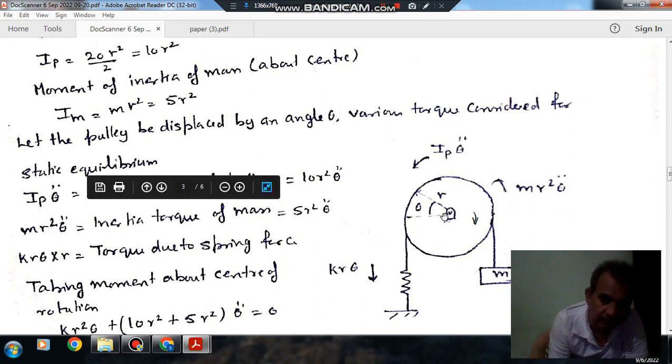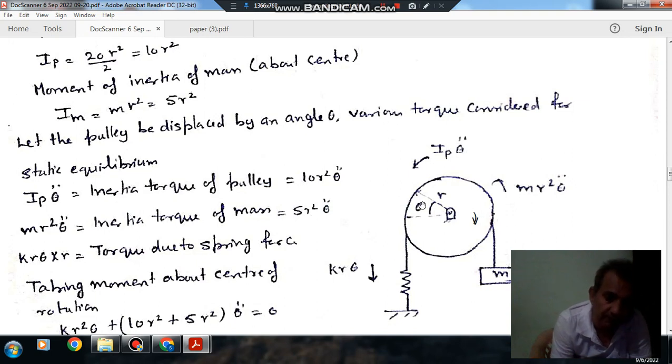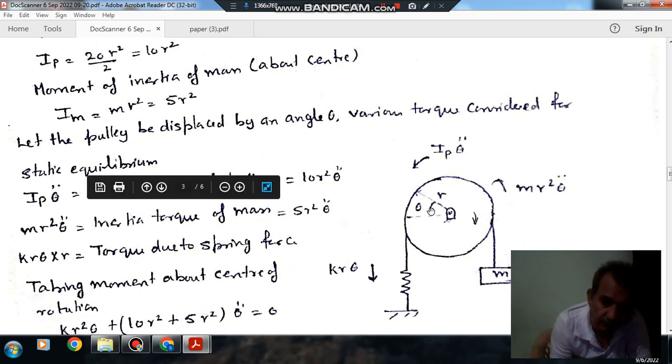So now this is the displaced position of the system or pulley, and spring force acting on it is KR theta. So this is your dynamic problem because the pulley is rotating.